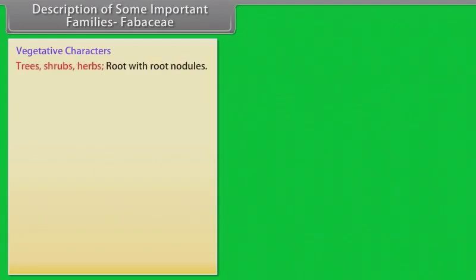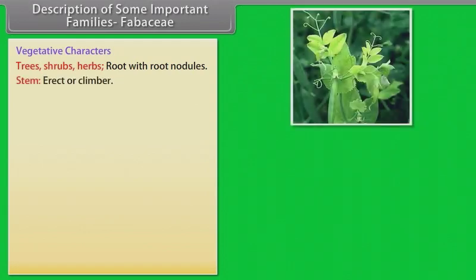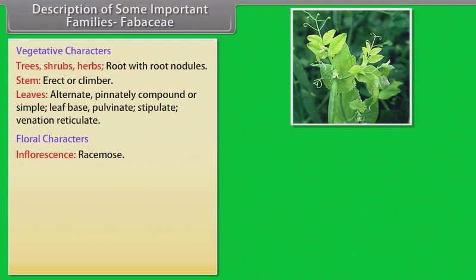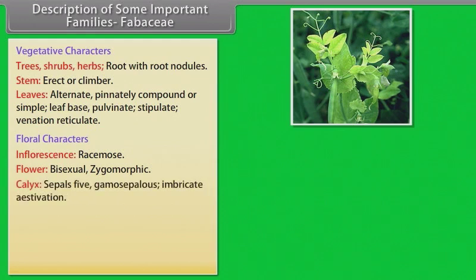Vegetative characters: trees, shrubs, herbs; root with root nodules; stem erect or climber; leaves alternate, pinnately compound or simple, leaf base pulvinate, stipulate, venation reticulate. Floral characters: inflorescence racemose; flower bisexual, zygomorphic; calyx: sepals 5, gamosepalous, imbricate aestivation.